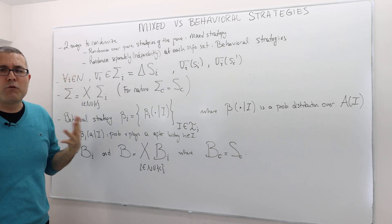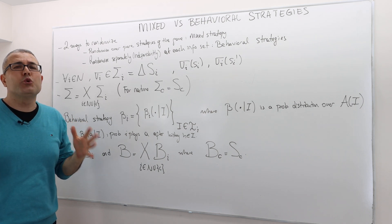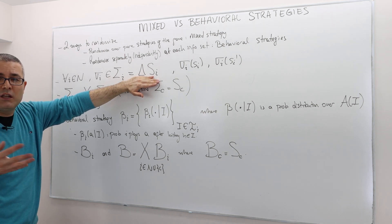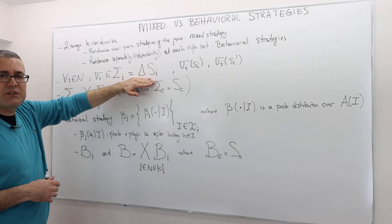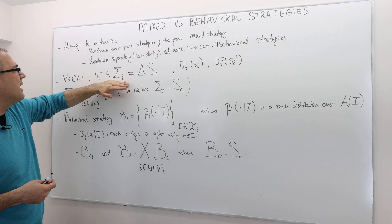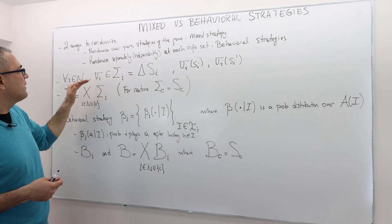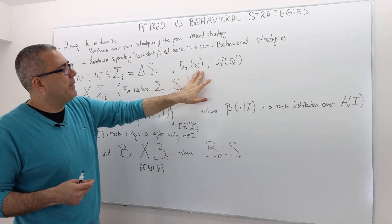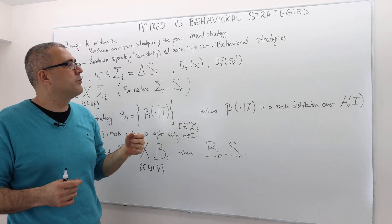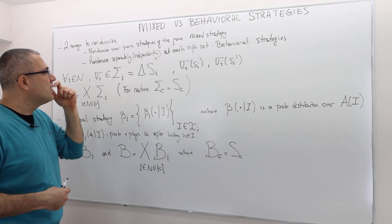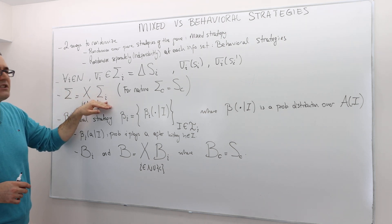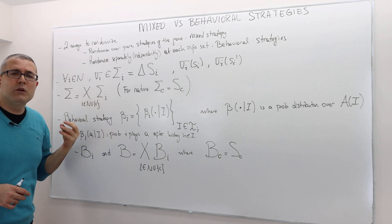There are two ways to randomize over strategies. You can randomize over all possible pure strategies. Each player i has a strategy set space S_i, which are functions. You can just pick a randomization over all potential pure strategies. We denote this sigma_i, and a standard element is small sigma_i. This is called a mixed strategy. So sigma_i(S_i) denotes the probability that player i is going to play pure strategy S_i, and sigma_i(S_i prime) is the probability that he's going to play another pure strategy S_i prime. Capital sigma is the cross product of all the mixed strategy spaces of the players, including nature, which we call the mixed strategy profile.